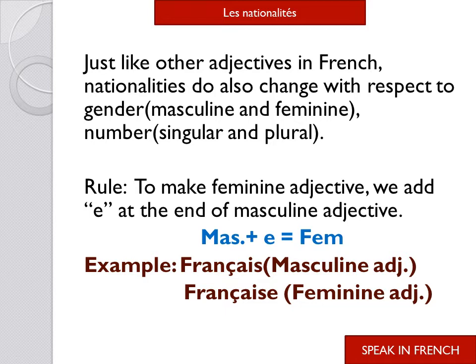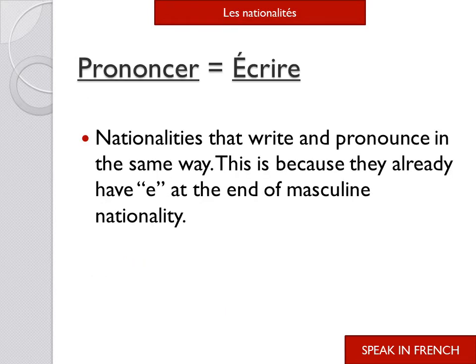For example: français — it is a masculine adjective. To convert it into a feminine adjective, we add 'e': française. The pronunciation will also change. For your convenience, I have divided the nationalities into two parts. The first is where pronunciation equals spelling — meaning how we pronounce the nationality in French is the same as how we write it. This is because they already have 'e' at the end of the masculine nationality.